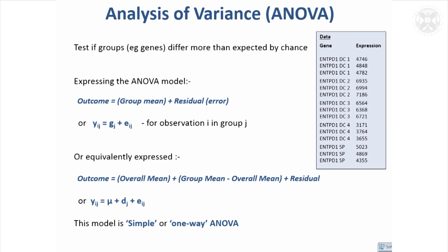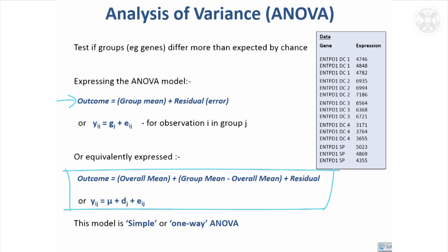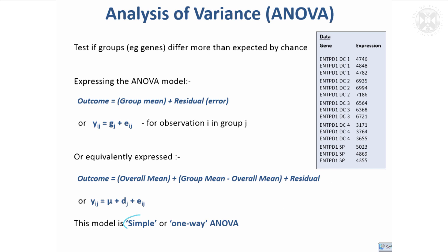Another way of parameterizing the model is almost the same, except instead of giving the group mean directly, it gives an overall mean for the data plus the difference D_J of the group mean from that overall mean. It's exactly the same except it has the overall mean in the model too. The parameters will be slightly different but that won't affect the p-value. This is a quite simple version called one-way analysis of variance, because we're only comparing between one set of groups.